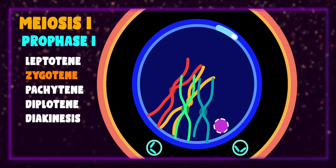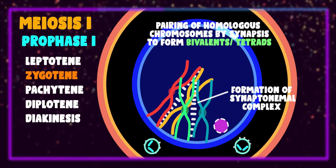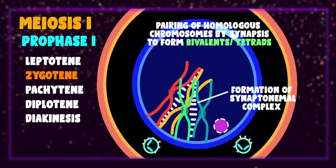In zygotene, pairing of homologous chromosomes occurs by an event called synapsis, and the paired chromosomes are now called bivalents or tetrads. The bivalents are stabilized by formation of nucleoprotein complex called synaptonemal complex.